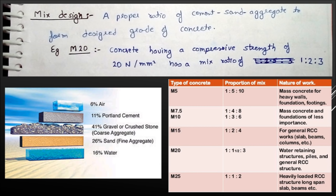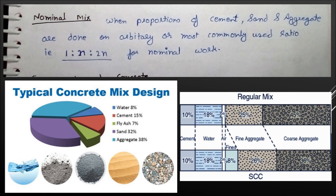Coming to an important term which is mix design. A proper ratio of cement, sand and aggregate to form a desired grade of concrete is known as mix design. For example, M20 or M30. Nominal mix is 1:2:4, meaning if we add one mug of cement, we will provide 2 mugs of sand and 4 mugs of aggregate.